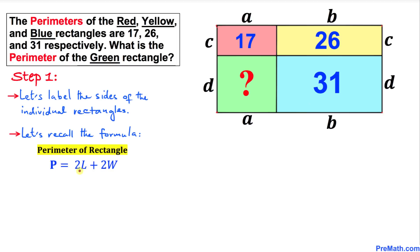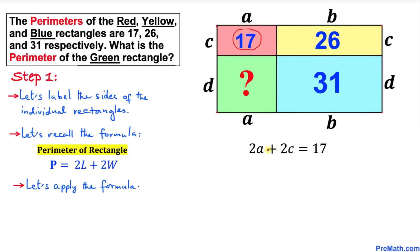Now let's recall the formula: the perimeter of a rectangle is always equal to two times the length plus two times the width. Let's apply this formula to the red rectangle. The perimeter becomes two times a plus two times c, so: 2a + 2c = 17. I'm going to call this equation number one.